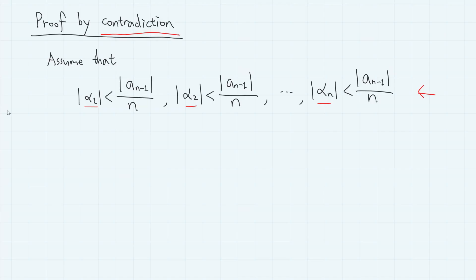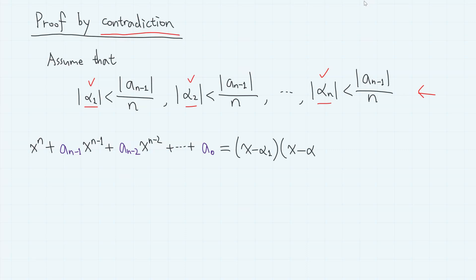Now we have to use the relation between roots and coefficients of the nth degree polynomial equation. Since our equation has roots alpha 1, alpha 2, so on, alpha n, this equation can also be written as (x minus alpha 1) times (x minus alpha 2) times so on, up to (x minus alpha n). The expansion becomes lengthy, but we can easily identify the first few higher degree terms. Obviously, the highest degree term is x to the power of n, which comes from choosing x in every one of these factors.